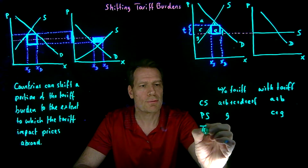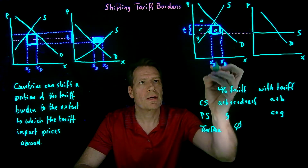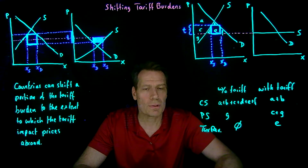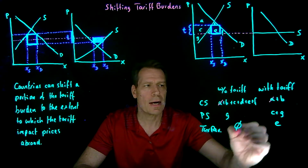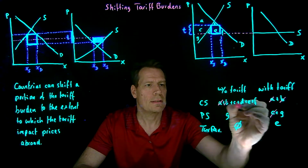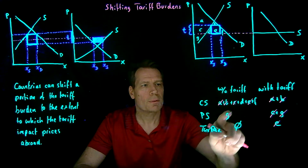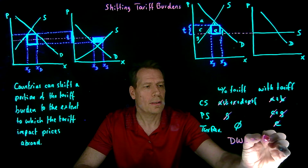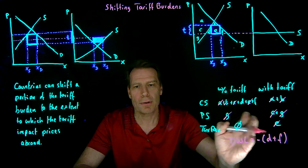We also have to account for the tax revenue. Without the tariff there is no tax revenue, but with the tariff we get tax revenue box E. Comparing the two columns: in both cases we get A, B, C, G, and E — but we lose D and F. So there is a deadweight loss equal to D plus F, because none of the tax burden has been shifted to make up for some of that loss.